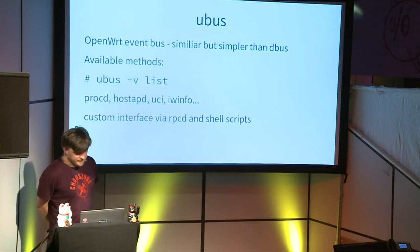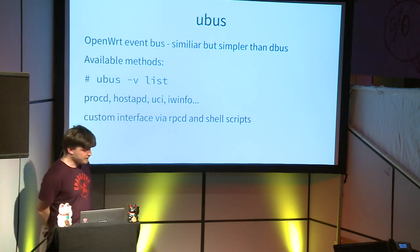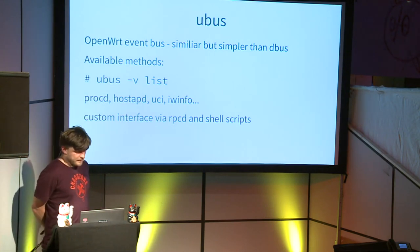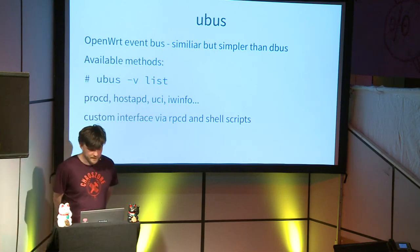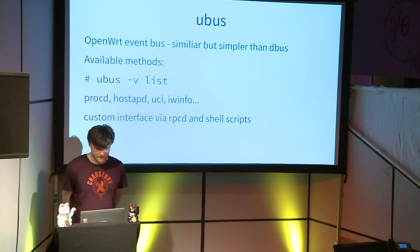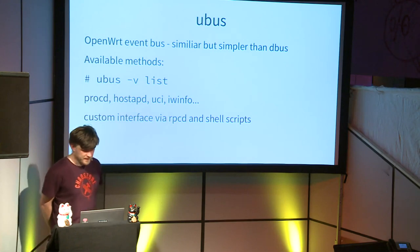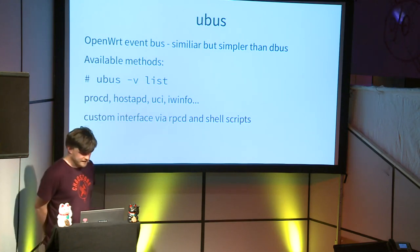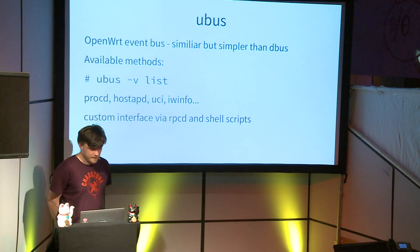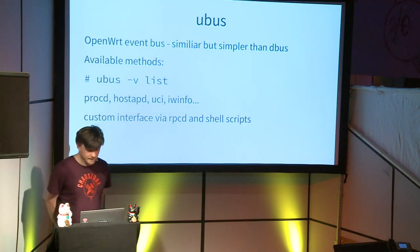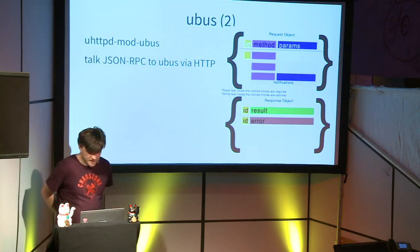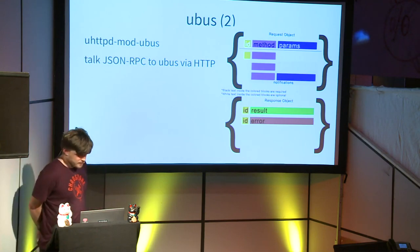On the device you can get a list and overview of callable methods with all their signatures. There's support in procd for starting and stopping processes, you can get the client list in hostapd, kick clients, set UCI values, scan for Wi-Fi networks, get a list of current Wi-Fi clients, and add your own interface via RPCD. You can also call mubus over HTTP with a small module called uhttpd-mod-ubus.